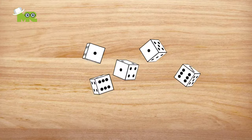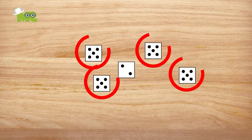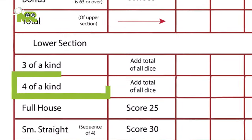While adding up all five dice, if at least four of them are the same number, the four of a kind is scored.